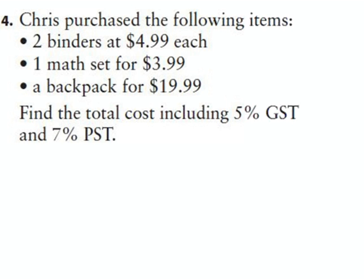Okay, this is section 4.4, question 4. It says Chris purchased the following items: two binders at $4.99 each, a math set for $3.99, and a backpack for $19.99. It says find the total cost including the GST and PST.